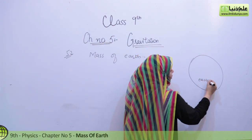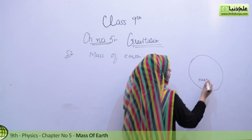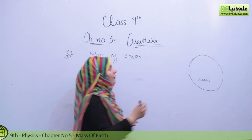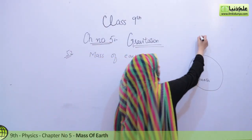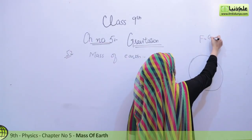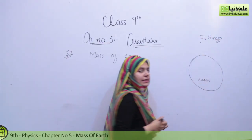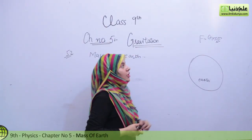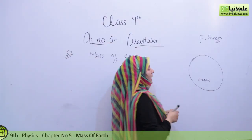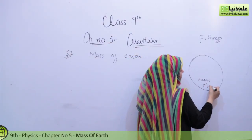With Earth, we have a force of gravitation present. We have to find out the formula. So F equals G M₁ M₂ over R squared. So here we need two masses. One mass has come out of Earth — that is M_E.